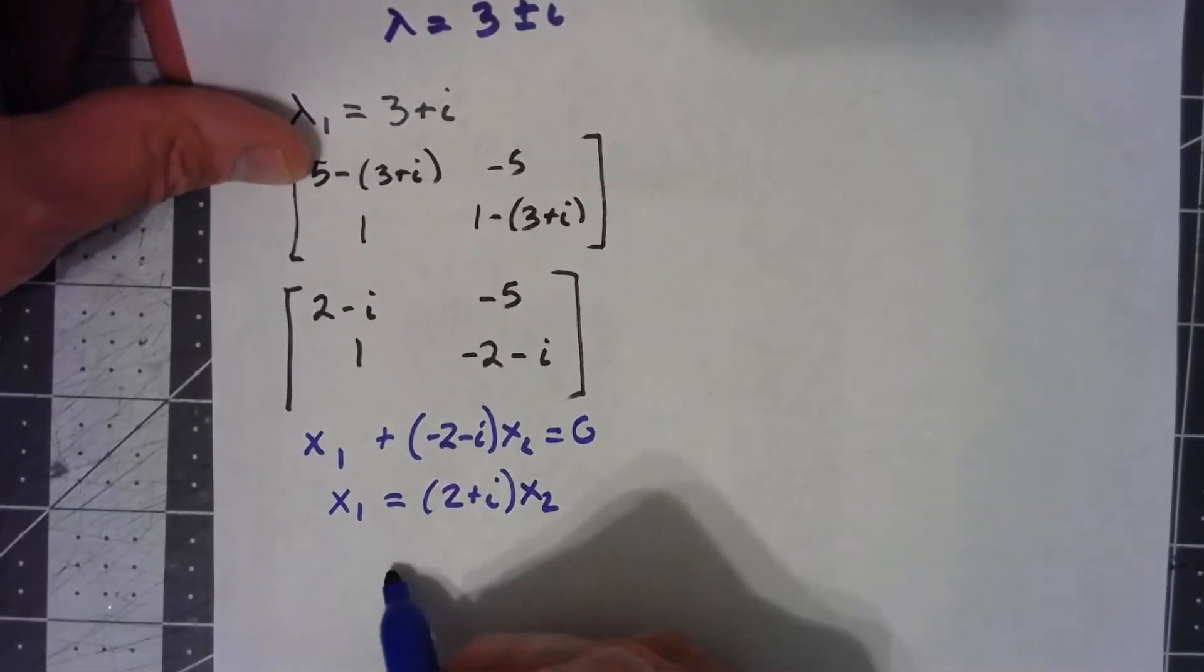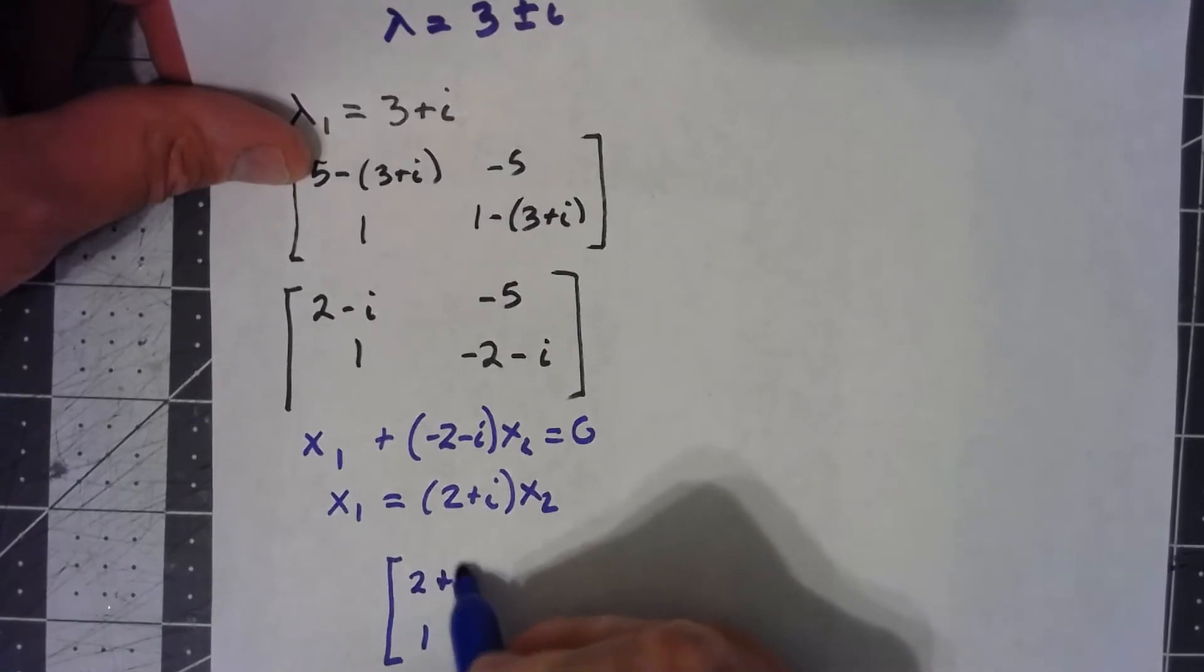The easiest way then is to say that my eigenvector, if x2 is 1, x1 is 2 plus i.